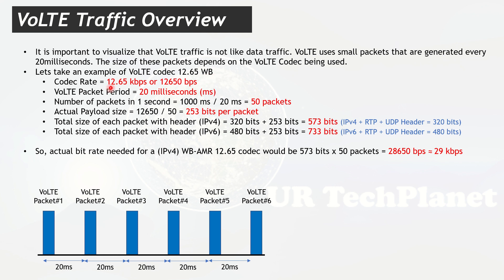Let's take the 12.65 kbps AMR-Wideband codec as an example. It generates 12,650 bits per second. Since every codec generates 50 packets per second, the payload size per packet is 12,650 ÷ 50 = 253 bits per packet. For IPv4, the header size (IPv4 + RTP + UDP) is around 320 bits, so total packet size is 320 + 253 = 573 bits.